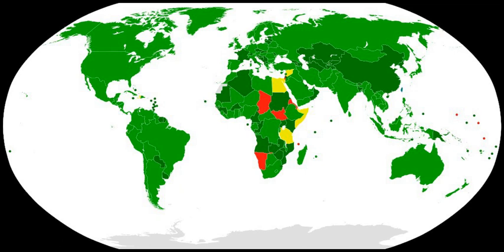The Fifth Review Conference took place in November–December 2001, not long after 9/11 and the Anthrax scare. Disagreement over certain issues, especially the fate of the ad hoc group, made agreement on any final declaration impossible. The conference was suspended for one year. When it was reconvened in November 2002, the Fifth Review Conference decided to hold annual meetings of states parties over the intersessional period leading up to the Review Conference in 2006 to discuss and promote common understanding and effective action on a range of topics.